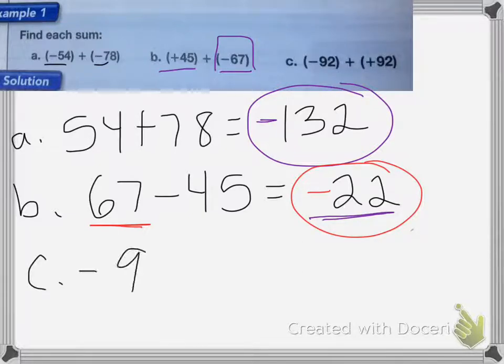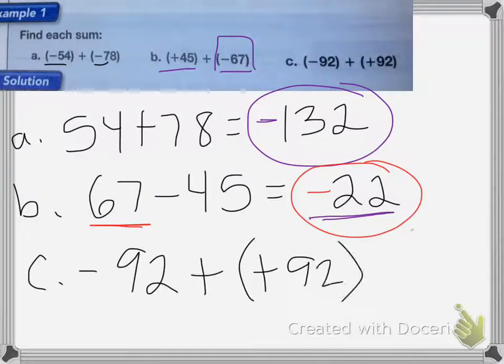On the last one, we have negative 92 plus positive 92. Negative 92 and positive 92 are opposites, so since they are opposites, the answer equals zero. We do not have a sign in front of it because zero is neither negative nor positive.